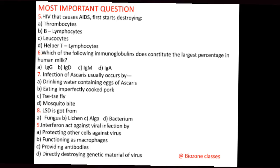One of the most important direct questions — Question number 8: LSD is obtained from — A. Fungus, B. Lichen, C. Alga, D. Bacterium. LSD is obtained from fungus, so A is the correct option.